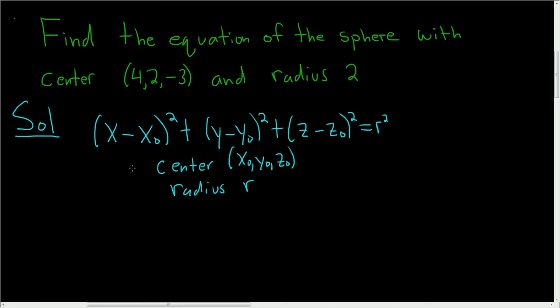All we have to do is plug the center and the radius into our formula and we're done. So this is x₀, y₀, z₀, and this here will be our r. So we end up with x minus 4, that's x₀...